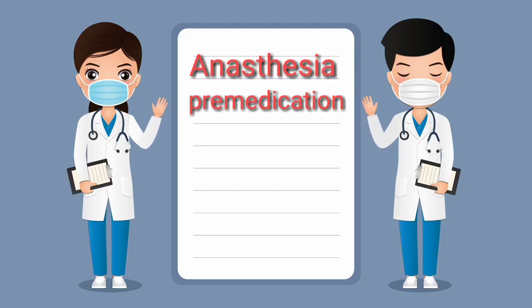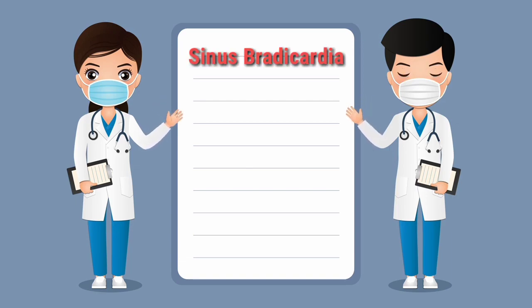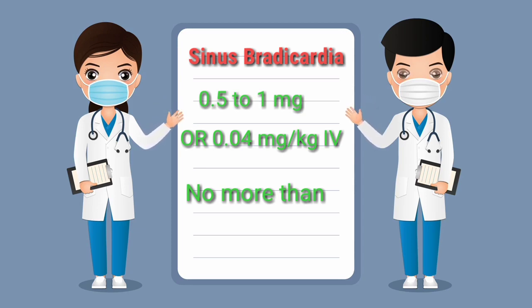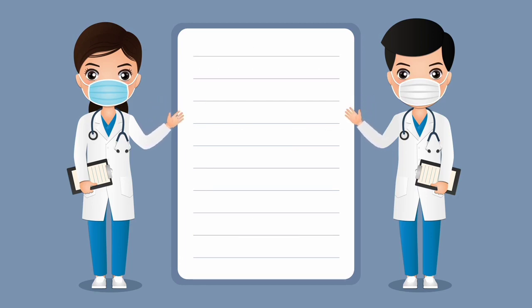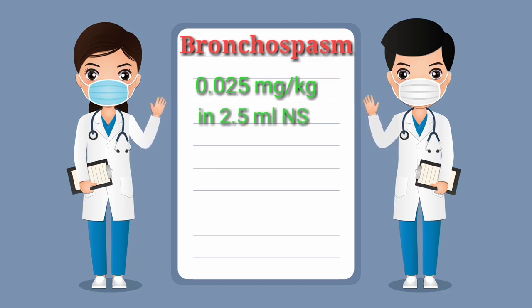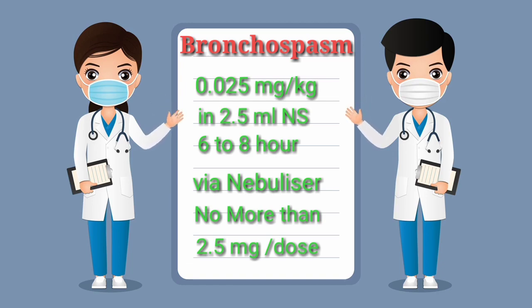In anesthesia premedication, the dose is 0.4 to 0.6 mg. In sinus bradycardia, 0.5 to 1 mg or 0.04 mg per kg IV — there should not be more than 3 mg. In bronchospasm, 0.025 mg per kg in 2.5 mL NS, given every 6 to 8 hours via nebulizer. In this condition, there should not be more than 2.5 mg per dose.